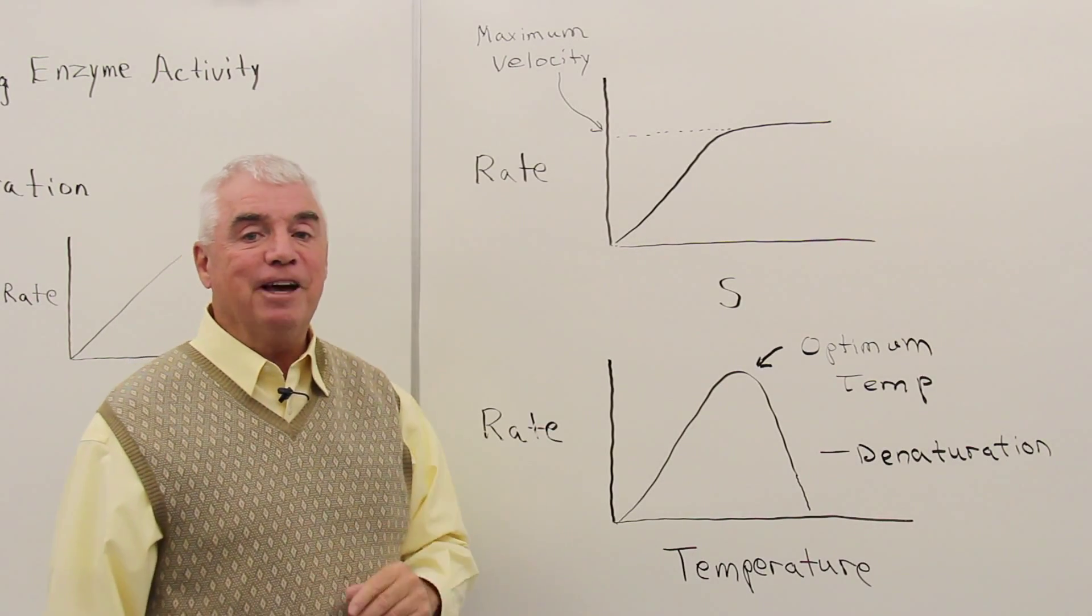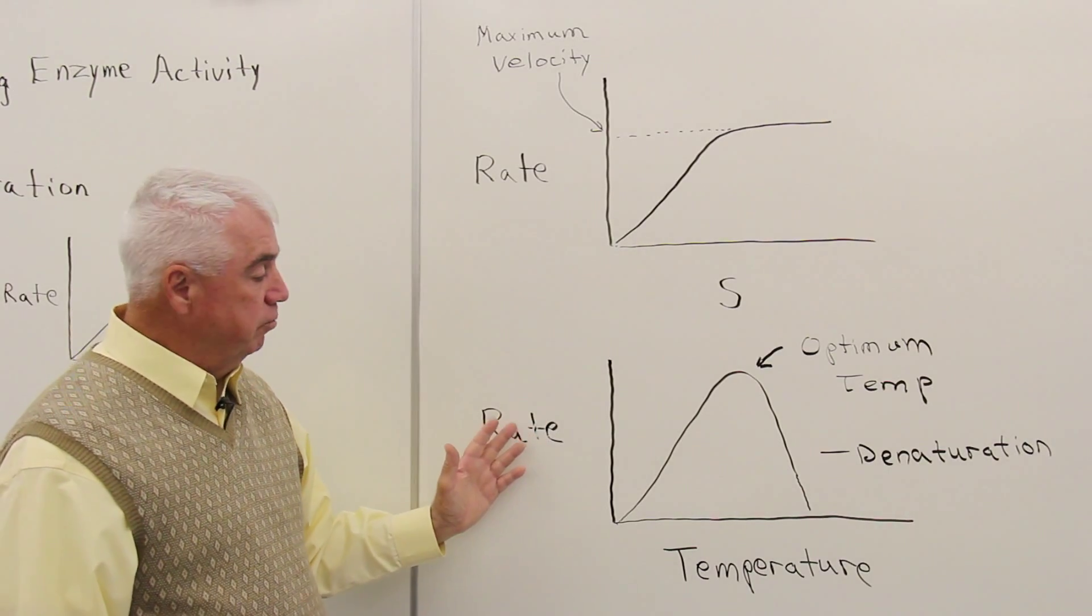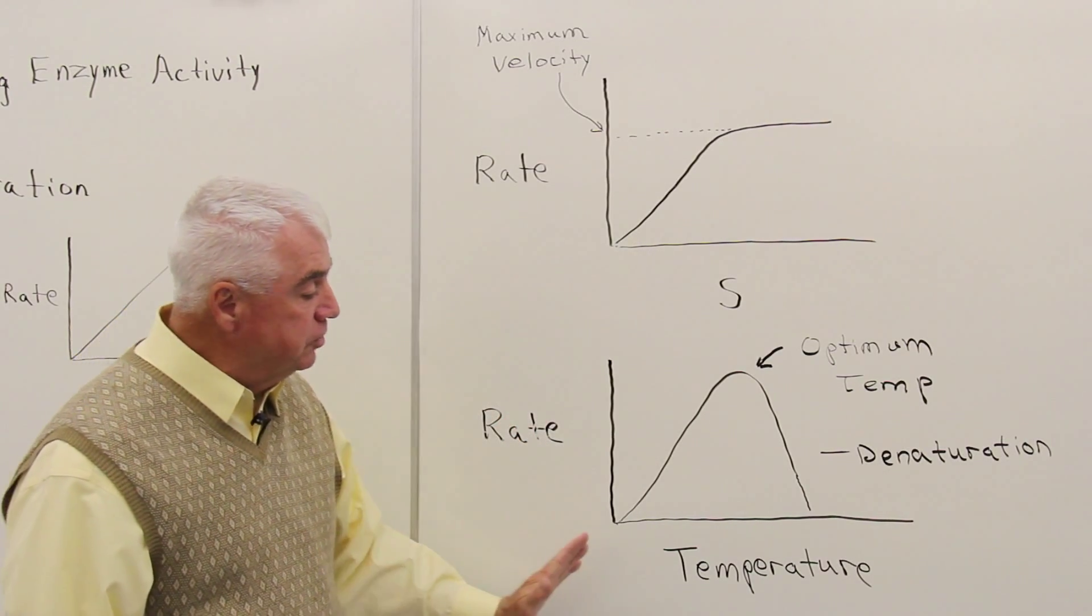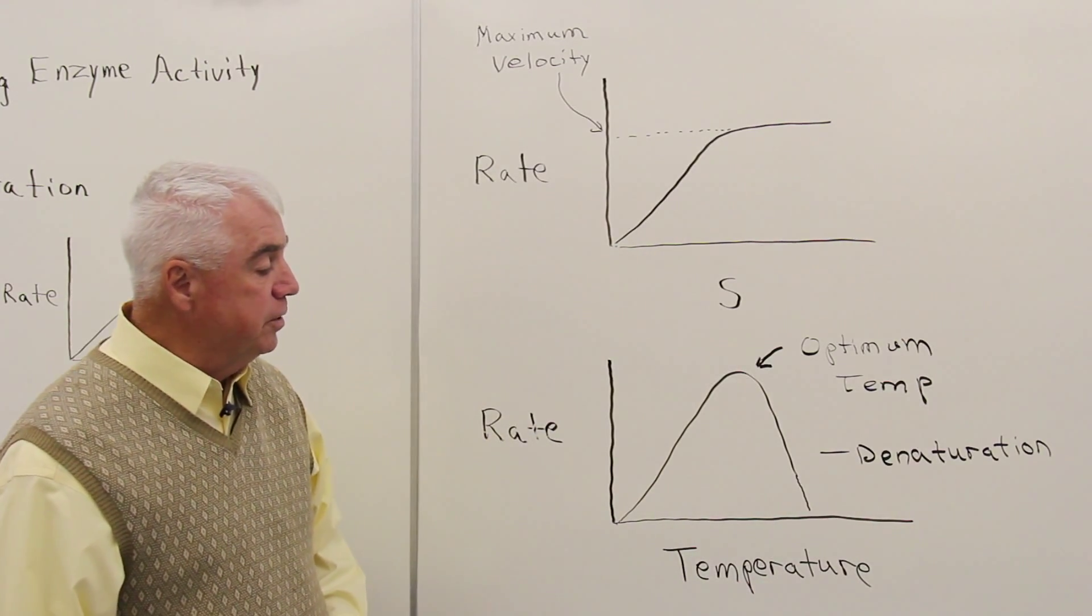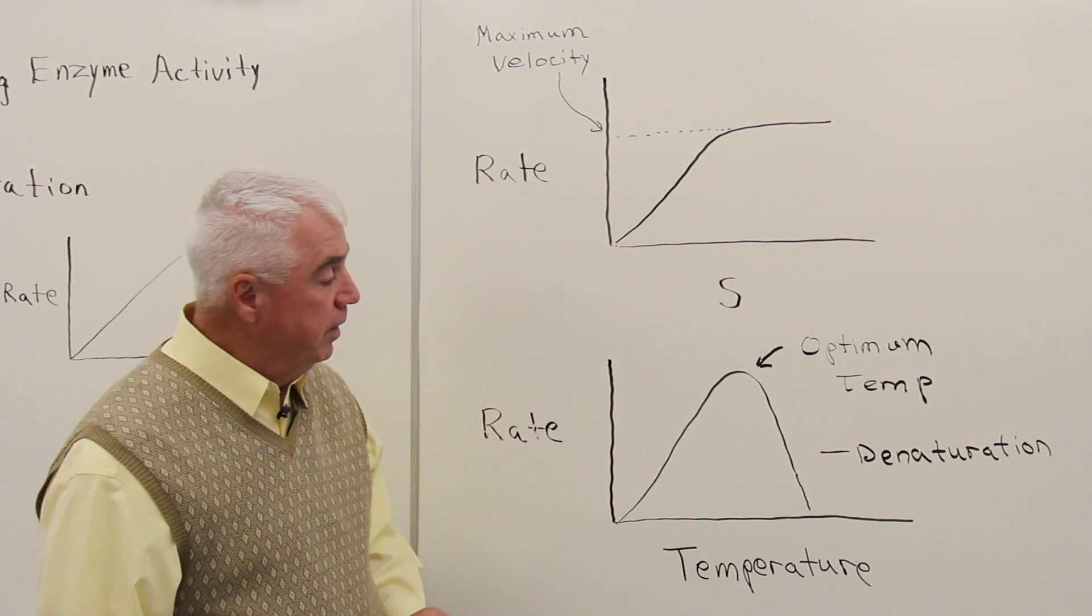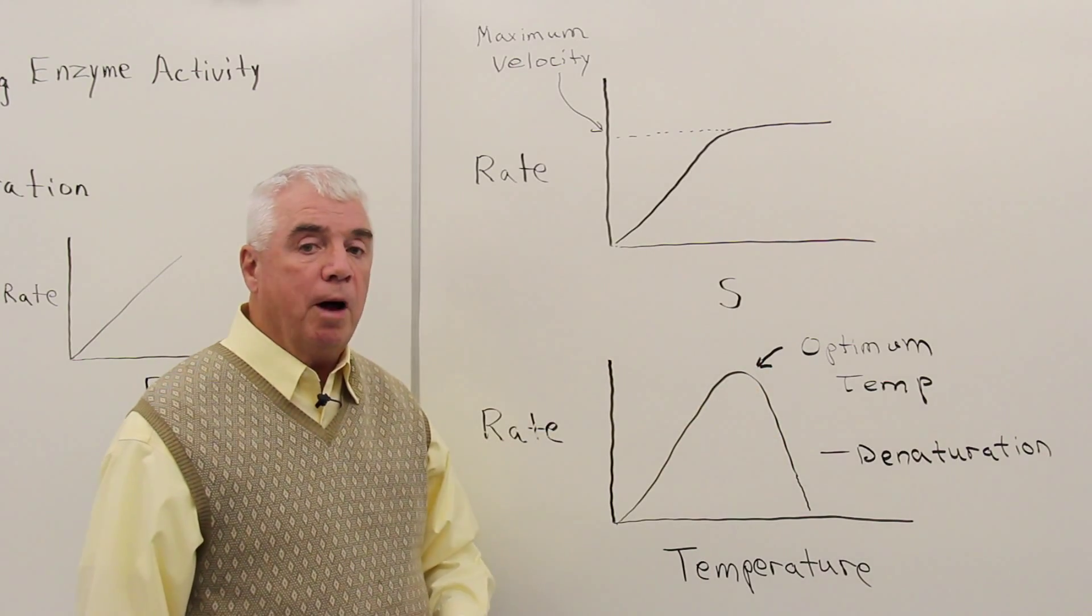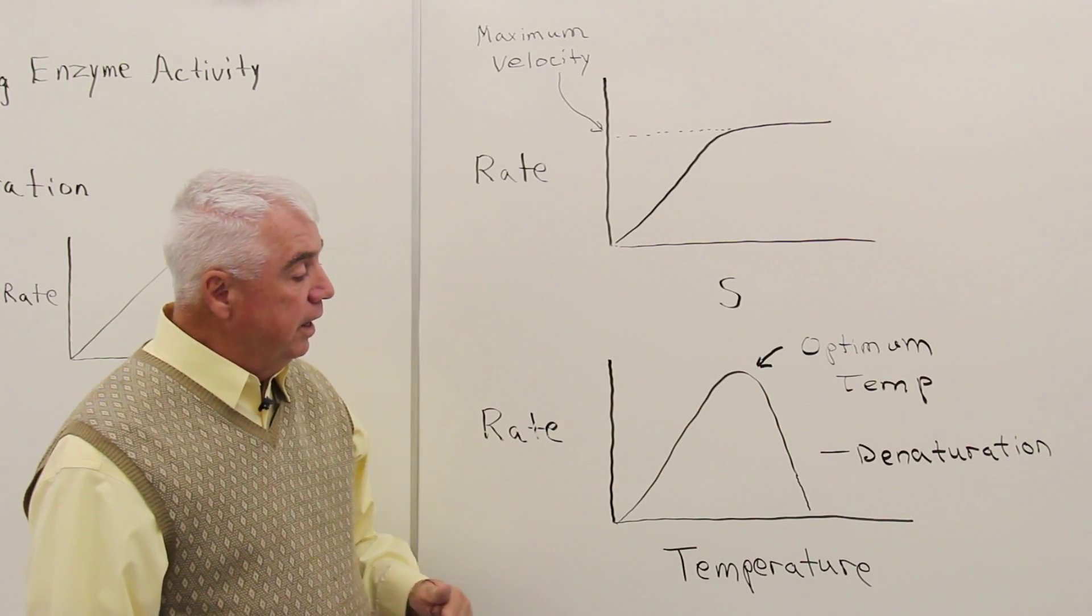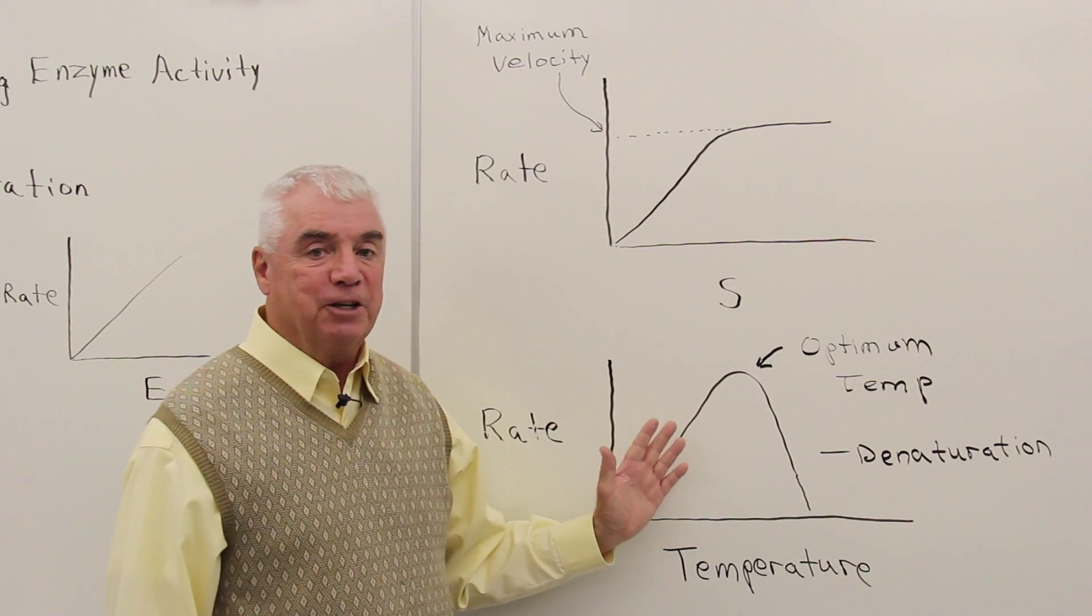Let's look at the effect of temperature. Down here's another graph. Again, rate is up here on the vertical axis. This time, we're increasing temperature as we proceed to the right. And we notice that we get an incline, a line going up, and then it sort of drops off precipitously. This is a graph that we would find for an enzyme-catalyzed reaction.